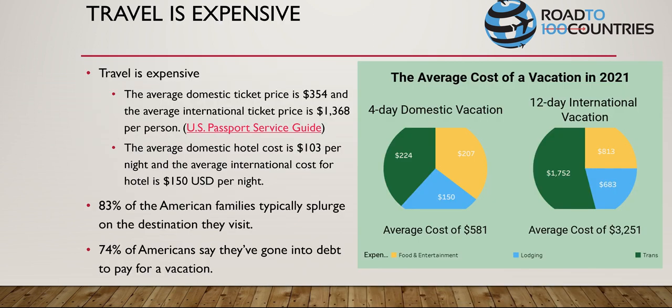Travel is very expensive. The average domestic ticket - meaning flying in the United States - is about $354 per ticket on average. The average international ticket from the United States is $1,368 per person. The average domestic hotel cost is $103, and the average international cost, outside of the U.S., is about $150 per night.